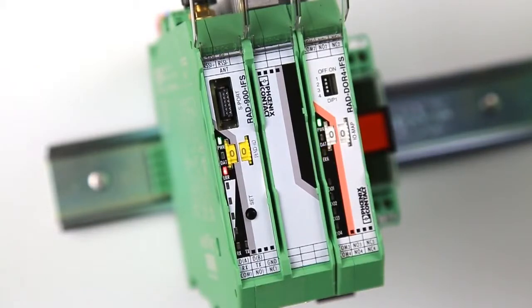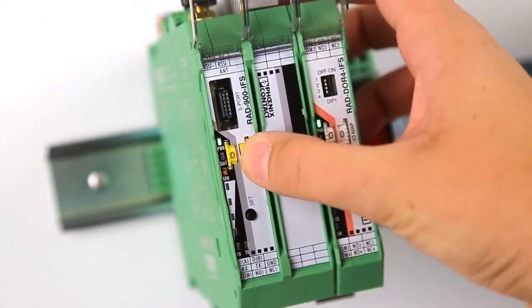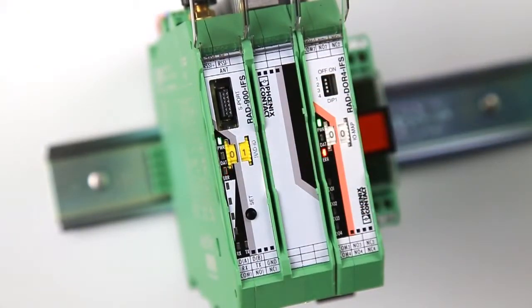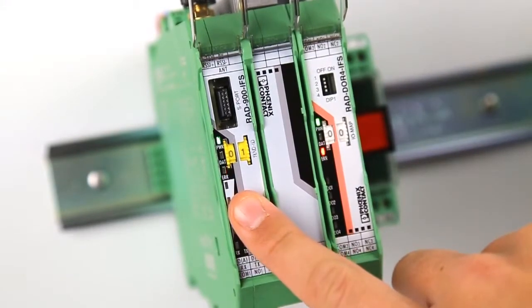First, configure one unit to master by setting the yellow thumb wheel to 01. To read in the thumb wheel setting, push the set button for one second.